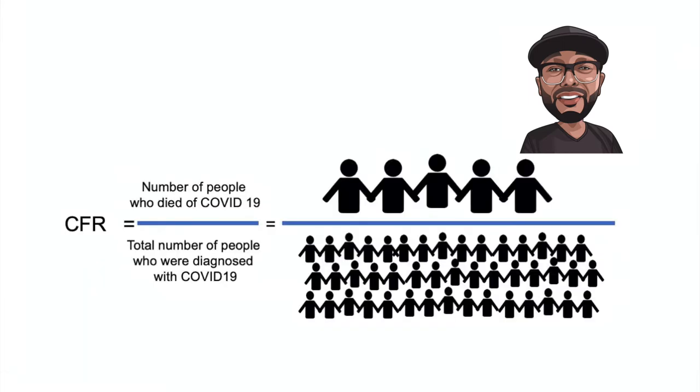The case fatality rate is a ratio of sorts. The number of people who die of a disease divided by the number of people who have it. In the case of the novel coronavirus, we're talking about the fraction of people infected with the virus who have died.